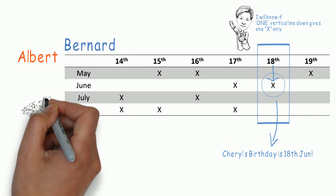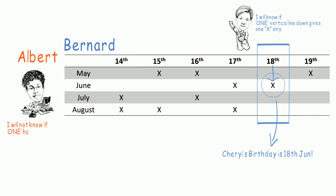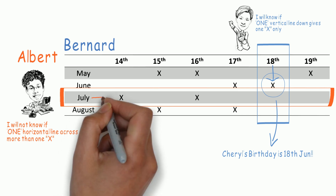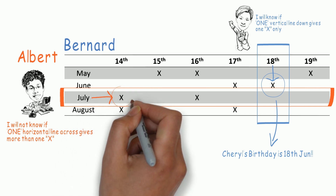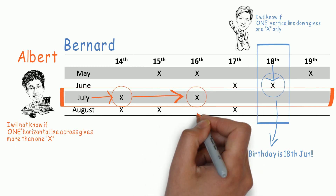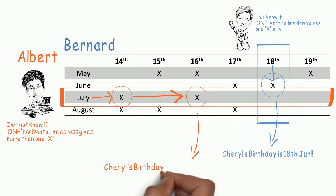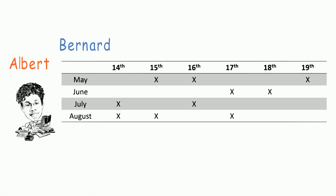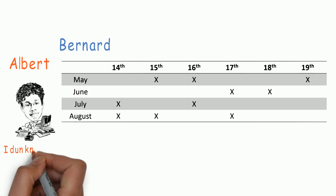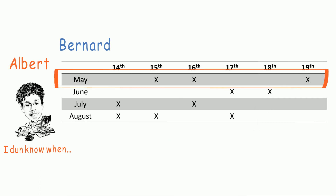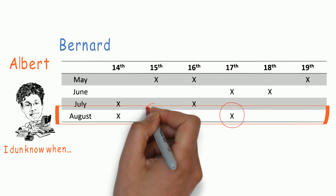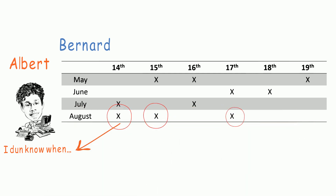Bernard will know it's 18th June because drawing a vertical line in blue results in only one highlighted cross. Albert, however, will not know which day Cheryl's birthday is if the month he is told results in more than one cross when horizontal lines are drawn. For example, if Cheryl tells him July, Albert will not know if it's 14th or 16th July because drawing a horizontal line in amber highlights more than one cross.